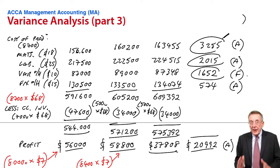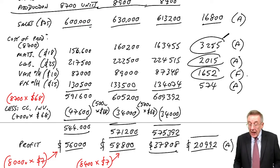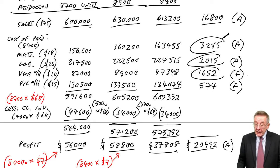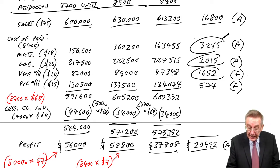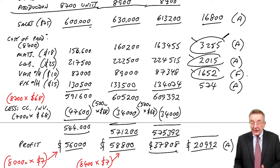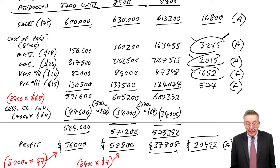Remember, in the first lecture we did the flexed budget which is on the screen now and looked at the total variances. In the second lecture I went through and analyzed the standard analysis required for the exam for each of the materials, the labour, and the variable overhead variances.